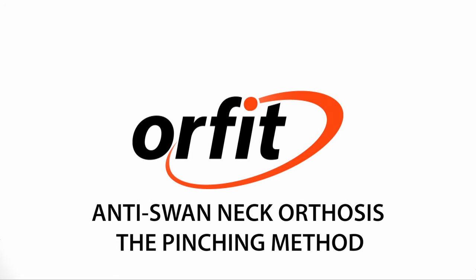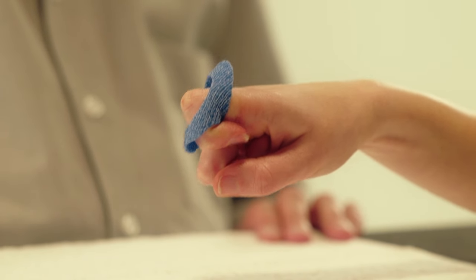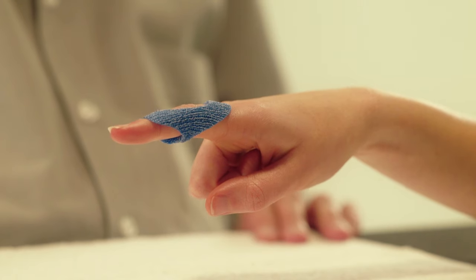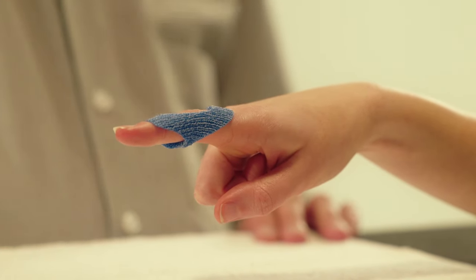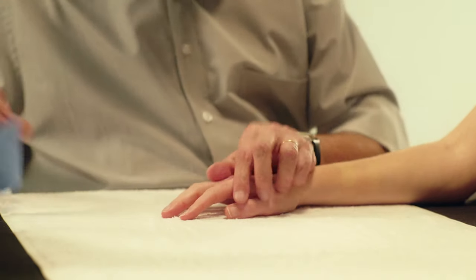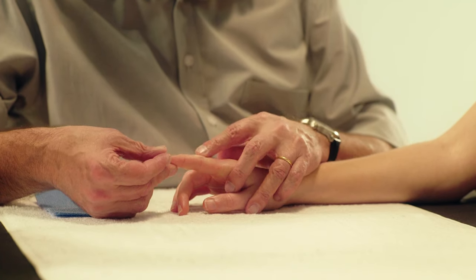Anti-swan neck orthosis using the pinching method. Here we will demonstrate how to fabricate an orthosis to prevent hyperextension of the PIP joint, also known as the swan neck deformity. The purpose is to prevent hyperextension of the PIP joint in the swan neck deformity.